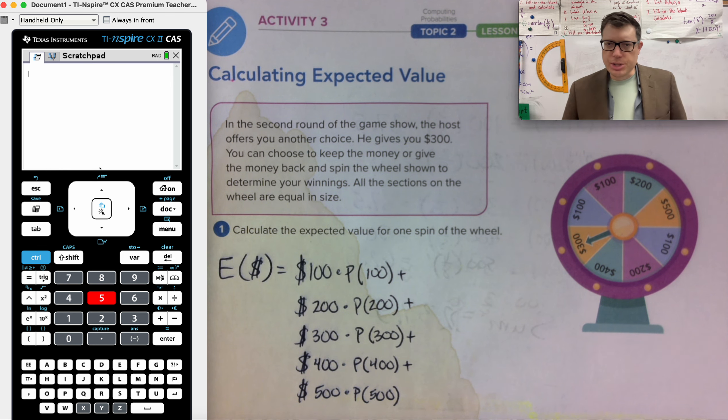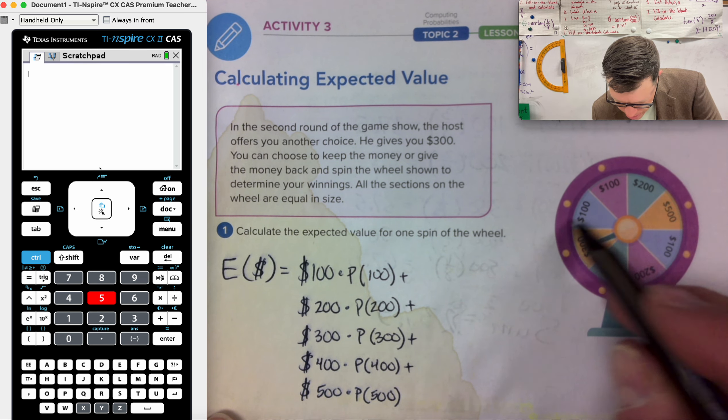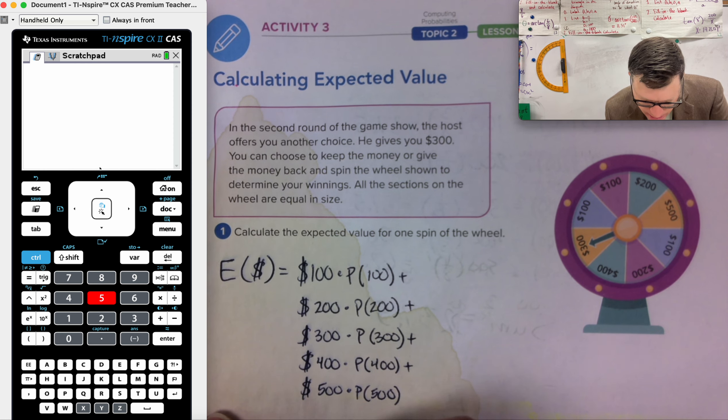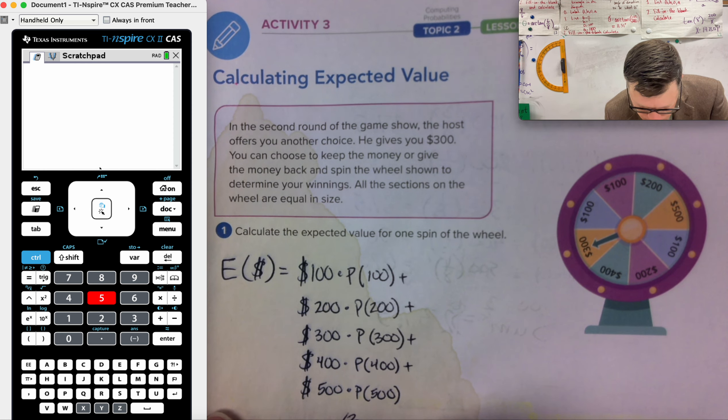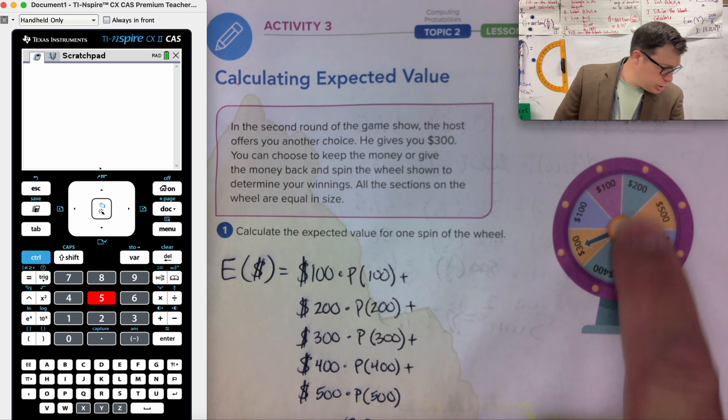$100 times one, two, three. Okay. So that's 100 times three out of eight. Plus in the 200, we have only two of those.